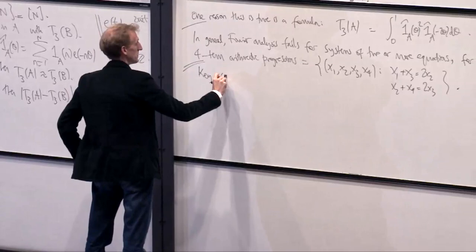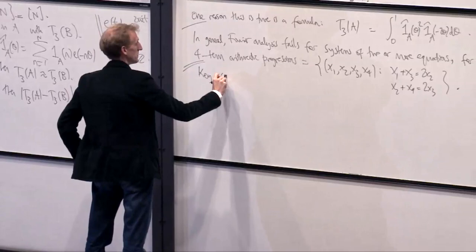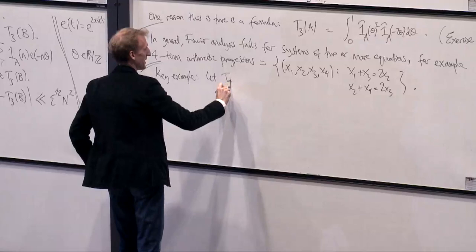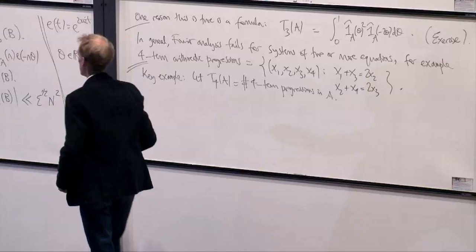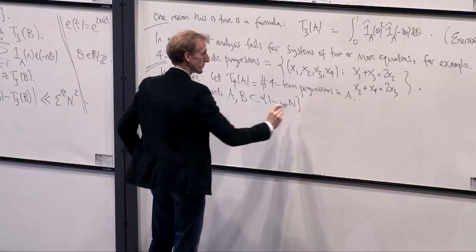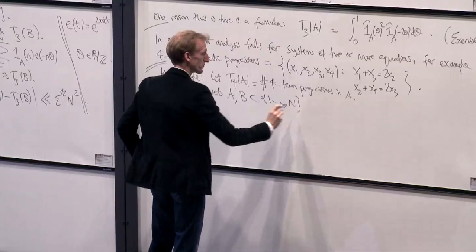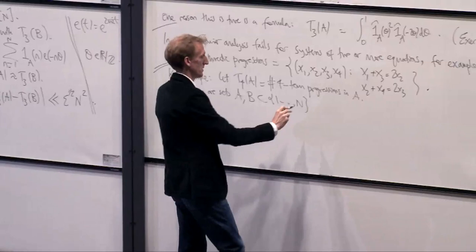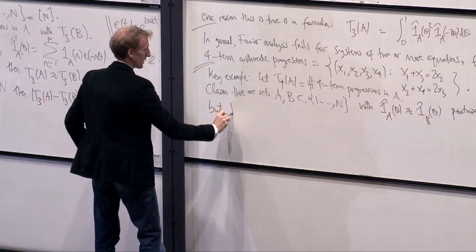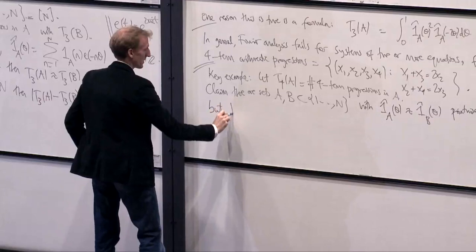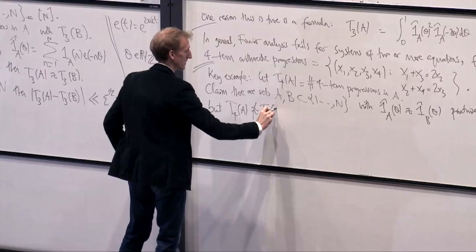I can be precise about the sense in which it's not useful: the analogue of what I described earlier fails. Here's a key example. Let T4(A) be the number of four-term progressions in A. I claim that there are sets A and B contained in {1, …, N} whose Fourier transforms are close pointwise, but whose number of four-term arithmetic progressions is quite different. The nature of this example is critical in motivating the rest of what I'll say.